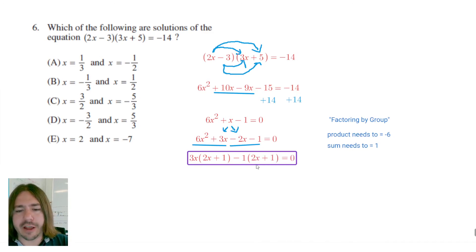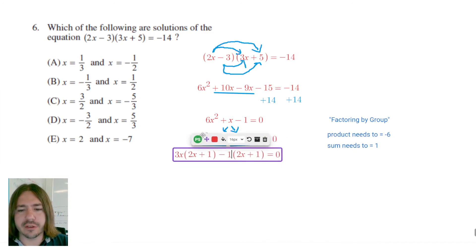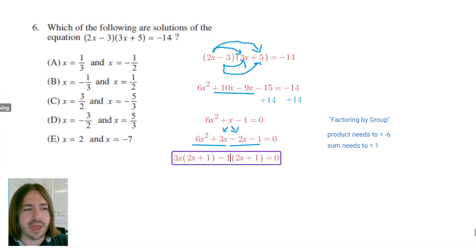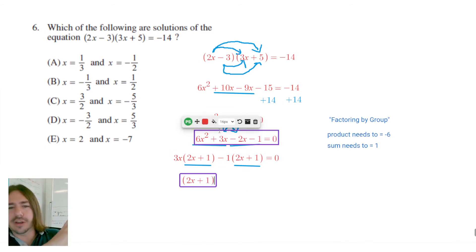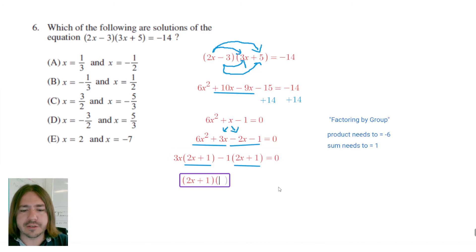At this point in the factoring by grouping technique, this is going to be like our little checkpoint here, and we want to verify that what's inside the parentheses is the same. Notice, yes, in fact, they are. So since those are the same, that is going to be one of our factors, 2x plus 1, and really what we're doing is we're just factoring that binomial out as sort of like its own GCF. And then that leaves us with 3x minus 1 as the other factor.